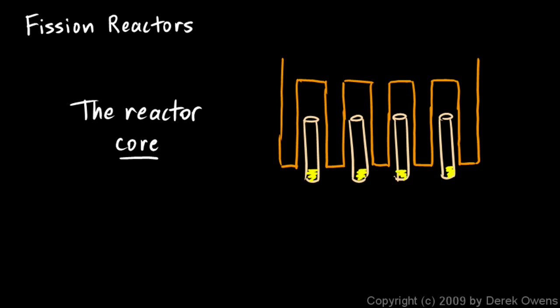So in this configuration the reaction would proceed pretty slowly. And then as they raise the control rods more and more of the uranium is exposed to other pieces of uranium and that causes the reaction to proceed a lot faster. And they can control the rate of reaction by raising and lowering the control rods.